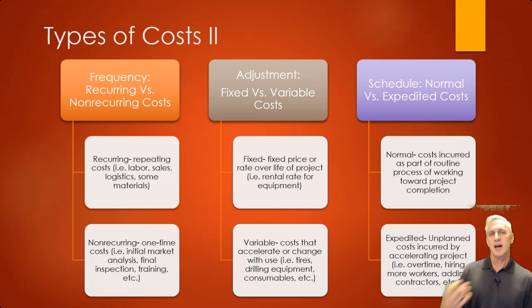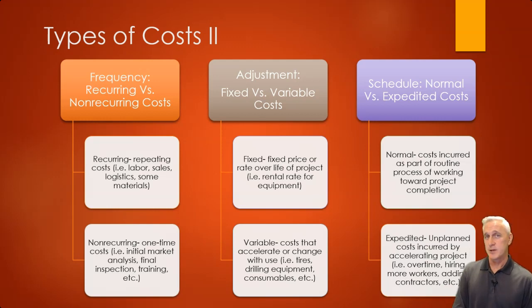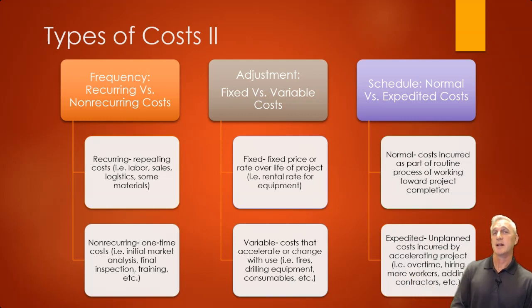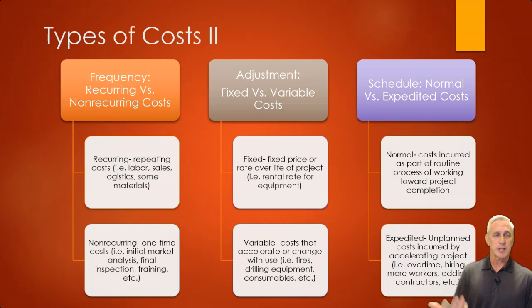Then there's also the schedule nuance: is this a normal schedule cost, or is it an expedited cost? For example, maybe you get normal shipping, but you really want overnight — that's an expedited cost because you're paying extra money to get something sooner. Shipping is one of the easiest examples to understand what an expedited cost is versus a normal cost.